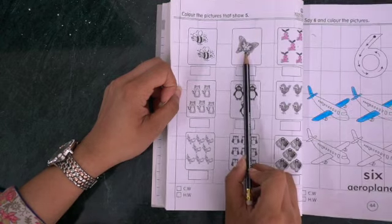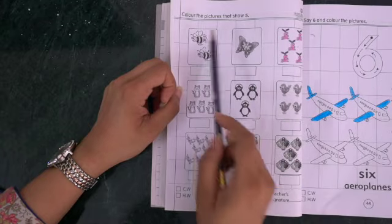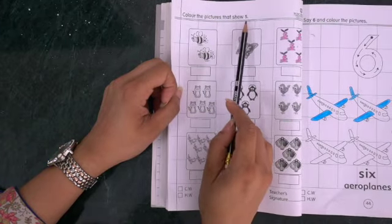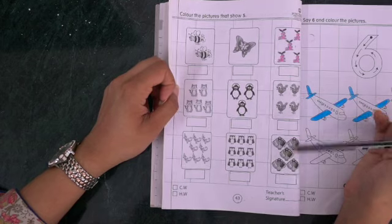Will we color this one? What is this? This is one butterfly. We will not color this one. Why? Because color the pictures that show five. So we have to count. How many are there?